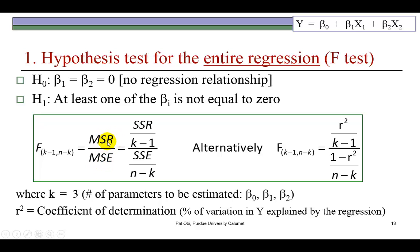Remember, mean square regression is sum of squares regression divided by k minus 1 degrees of freedom, where k is the number of parameters being estimated: β₀, β₁, and β₂. In this example, k is 3. 3 minus 1 would be 2. And then, mean square error is calculated as sum of squares error divided by n minus k degrees of freedom.